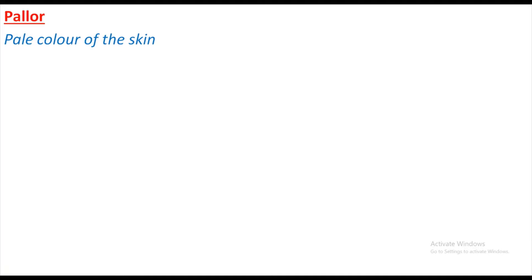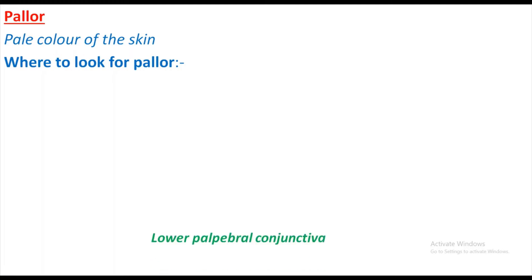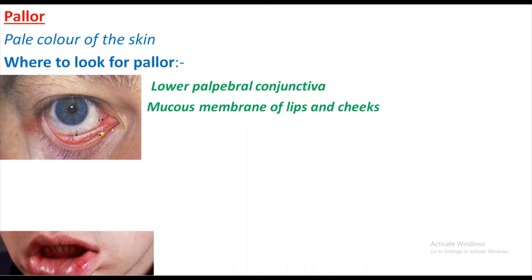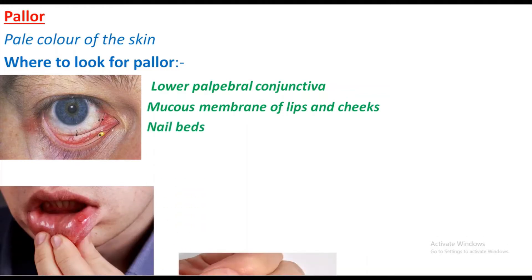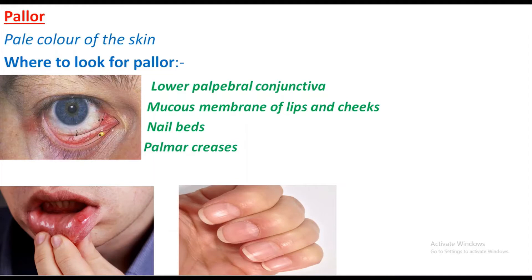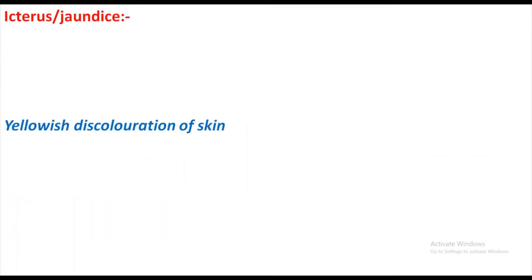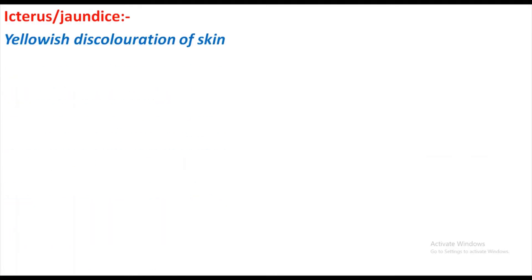Pallor is the indication of anemia — it is paleness of the skin. You should know where to look for pallor: it is the lower palpebral conjunctiva, mucous membrane of the lips and cheeks, nail beds, and palmar creases. These are the places where you look for pallor. You will also look for icterus and jaundice.